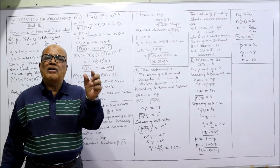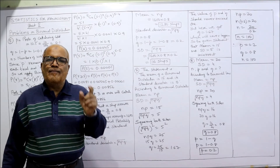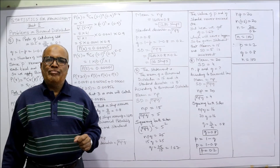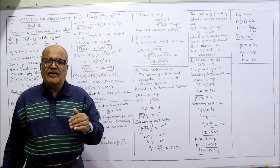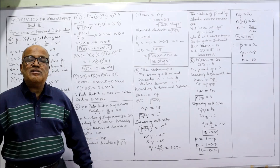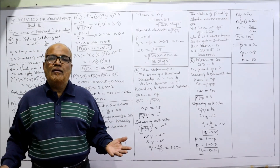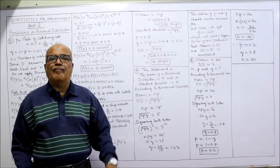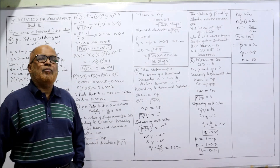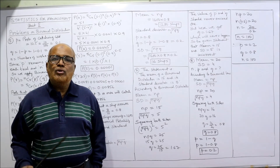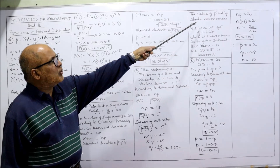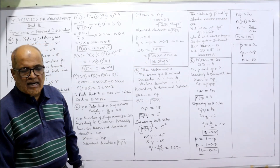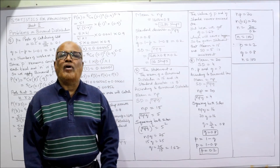Q is the probability of failure and P is the probability of success. A probability can never exceed 1. Here we got Q = 1.67, which is greater than 1 — this is impossible. Therefore, the given statement that the mean of a binomial distribution is 15 and the standard deviation is 5 is incorrect or false.